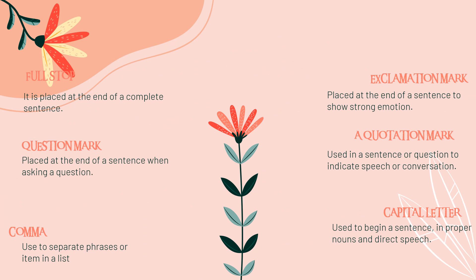For punctuation today you are going to learn 6 types. The first one is full stop. Full stop is called tanda noktah or tanda berhenti. It is placed at the end of a complete sentence. For example, if you write a complete sentence: 'I love you.' — full stop.